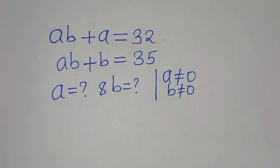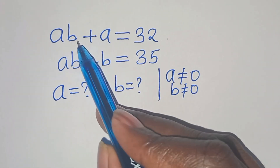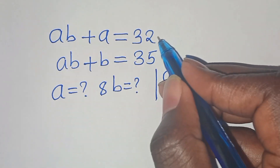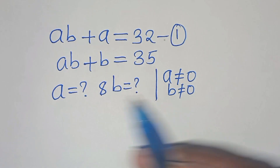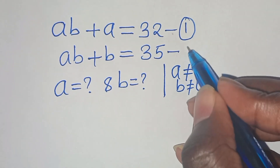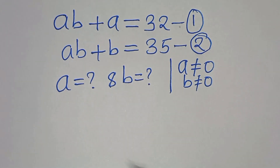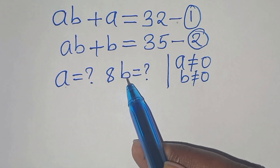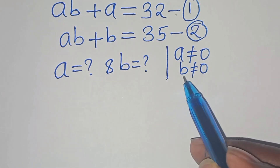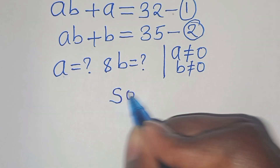Hello everyone, you're welcome to solve this nice algebra problem, which is ab plus a, this is equal to 2. Let's call this equation 1. And ab plus b, this is equal to 5, we can call this equation 2. Now, what is the value of a and what is the value of b, given that a is not equal to 0, as well as b is not equal to 0? So let's provide a solution from here.